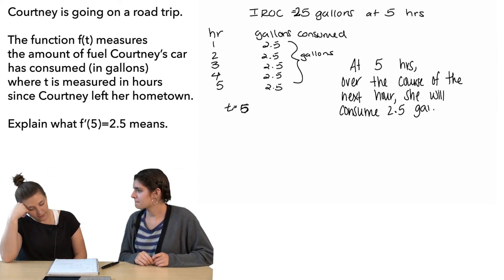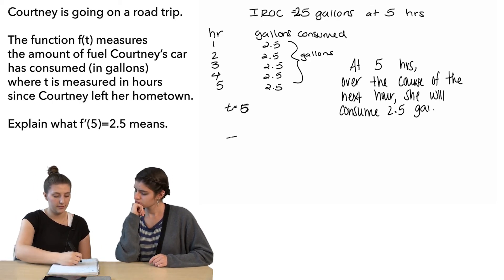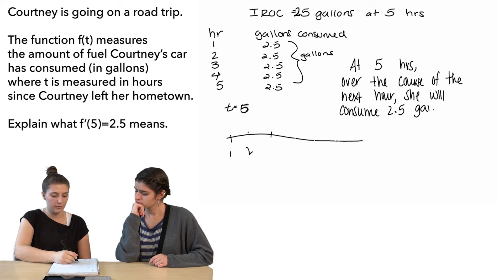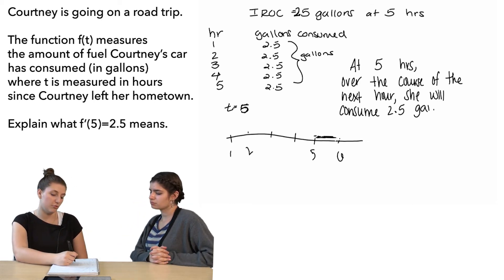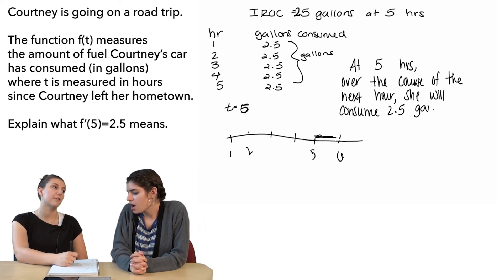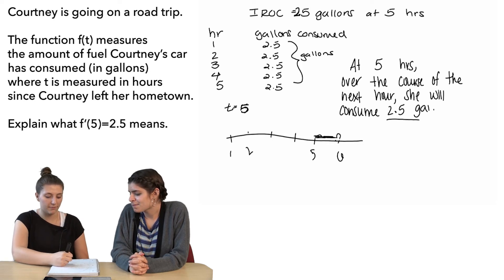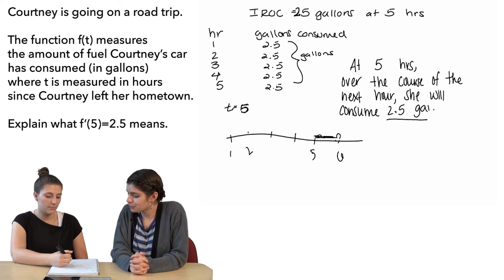Oh, however, that would say that she would have to travel at a constant rate at hour 5. So if we had like a timeline down here, when we had hour 1, hour 2, 3, 4, 5, that would mean between hour 5 and 6, she would have to be using that constant rate. Or like if she drove for 5 minutes after hour 5 and then didn't drive again until 5 minutes before hour 6, she wouldn't really use 2.5 gallons. That's true. Right.